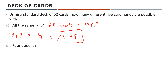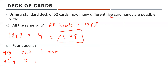What about exactly four queens? That's four queens and one other card. There are four queens total — 4C4 ways to choose all four — times 48C1 for one of the 48 remaining cards. That equals 48, which makes intuitive sense: you've taken all four queens and there are 48 other cards to fill the fifth spot.